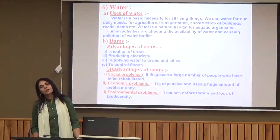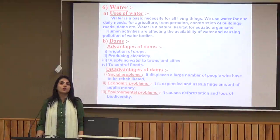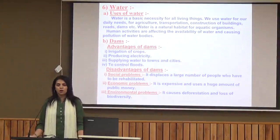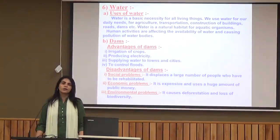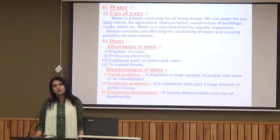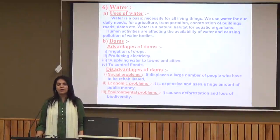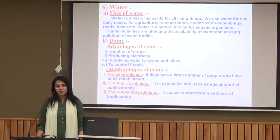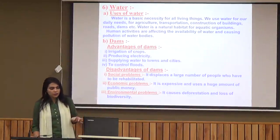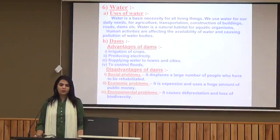The second natural resource we are going to talk about is water. Water is a basic necessity for all living things. We use water for daily needs, agriculture, transportation, and construction of buildings. It is the natural habitat for all aquatic organisms. Human activities — industrial waste and other activities — are affecting the availability of water and causing pollution to water bodies. Dams help in the irrigation of crops, production of electricity, supply of water to towns and cities, and control of floods.